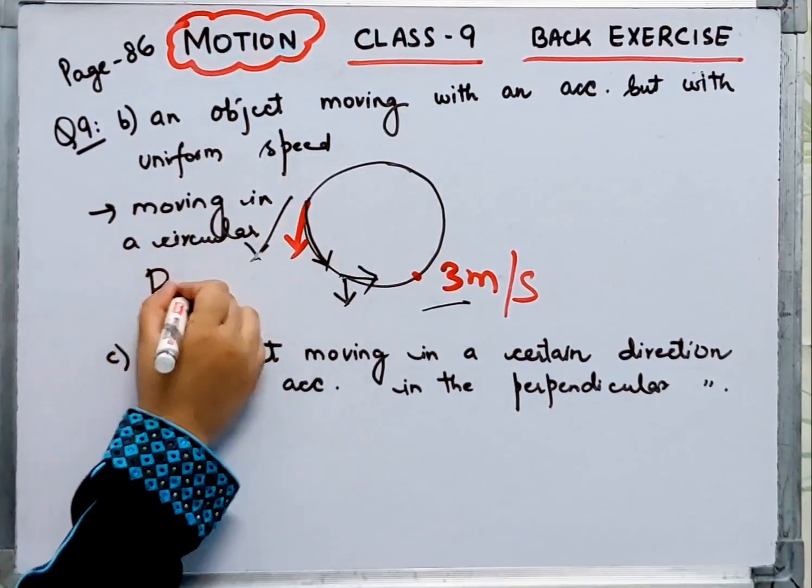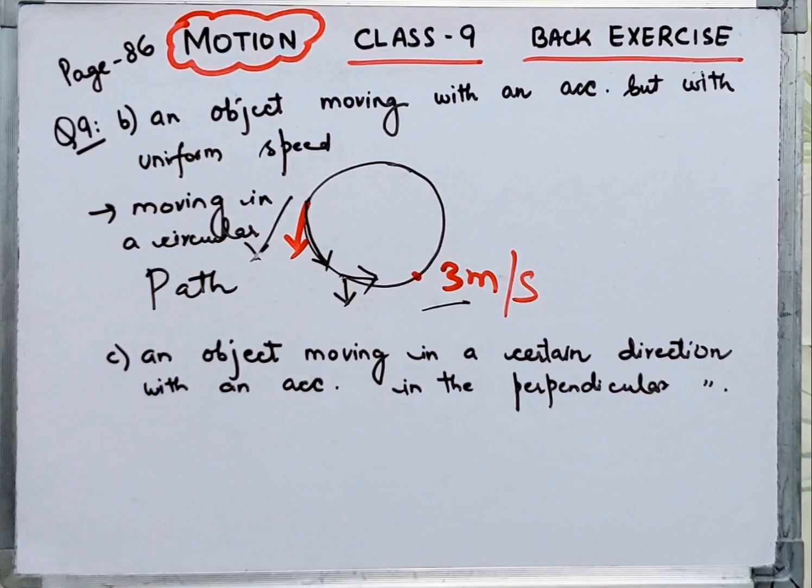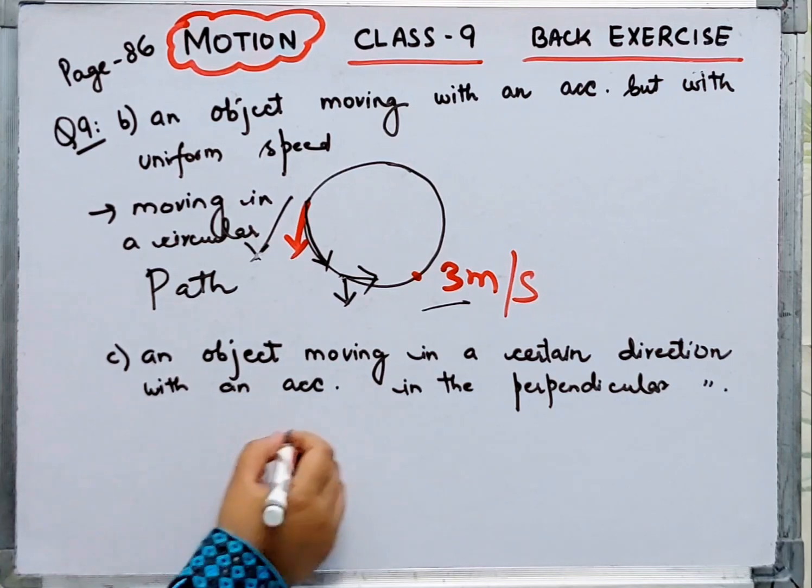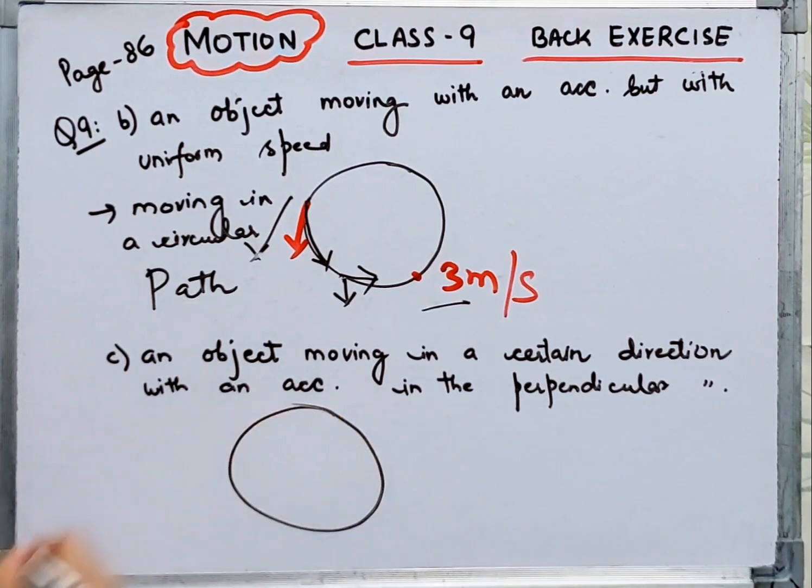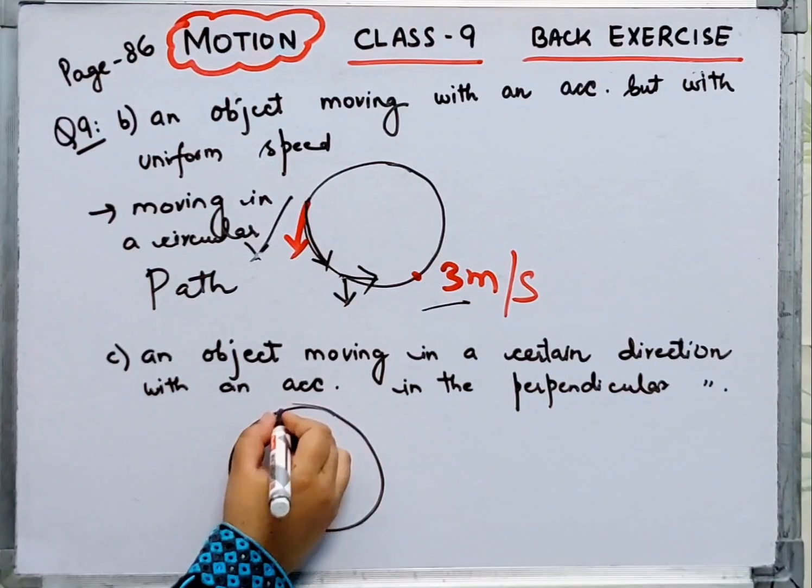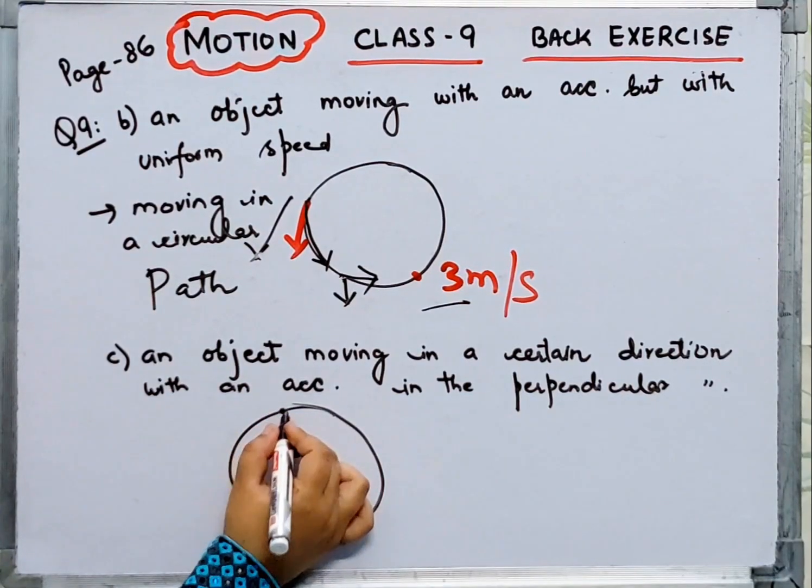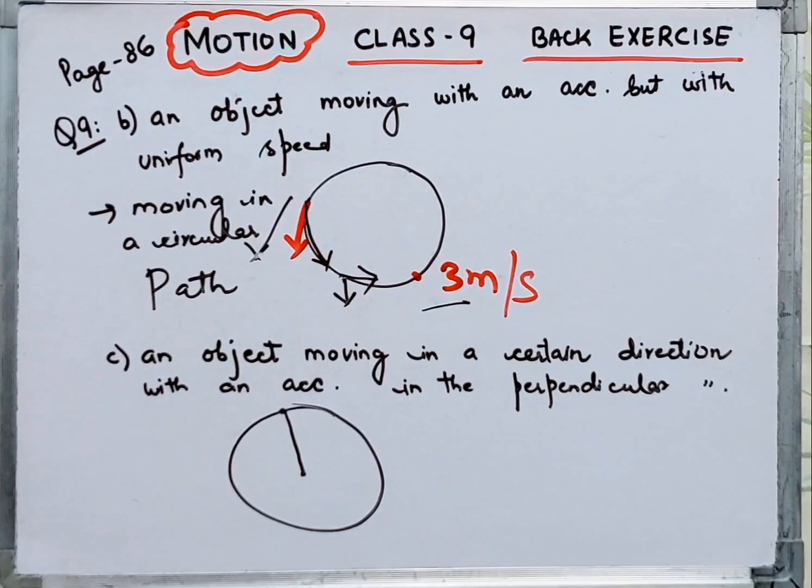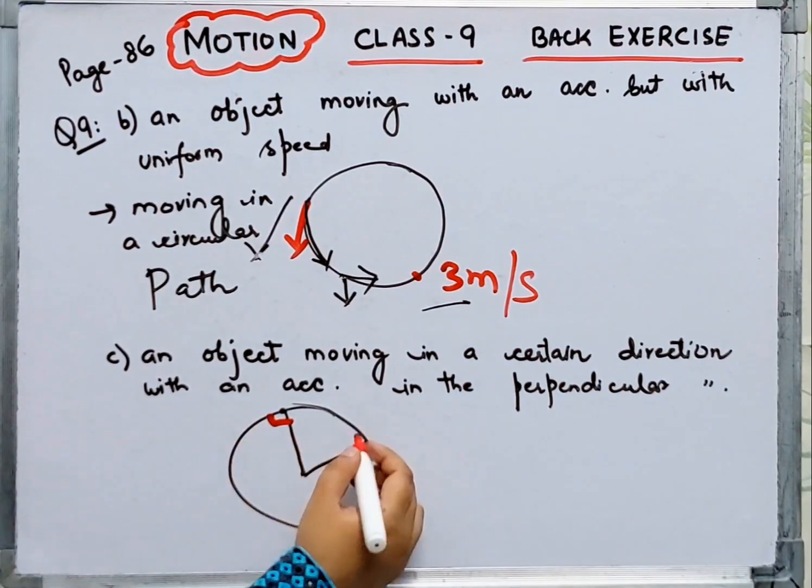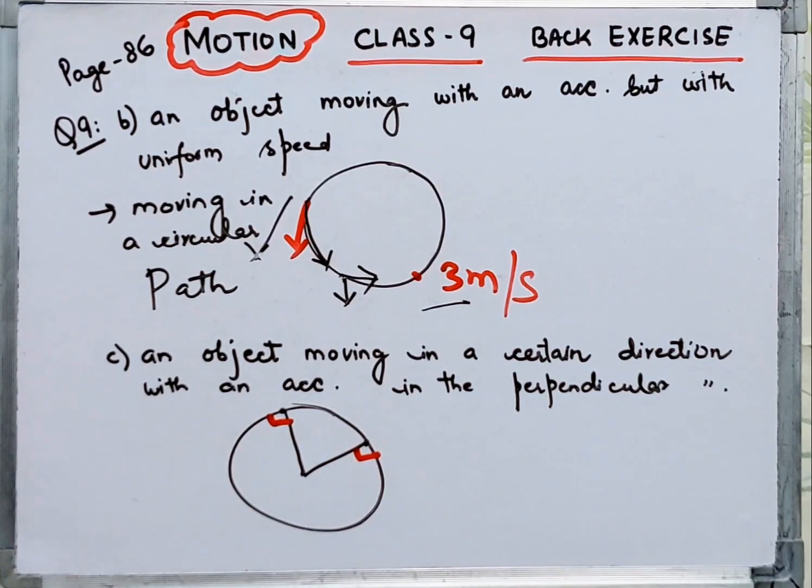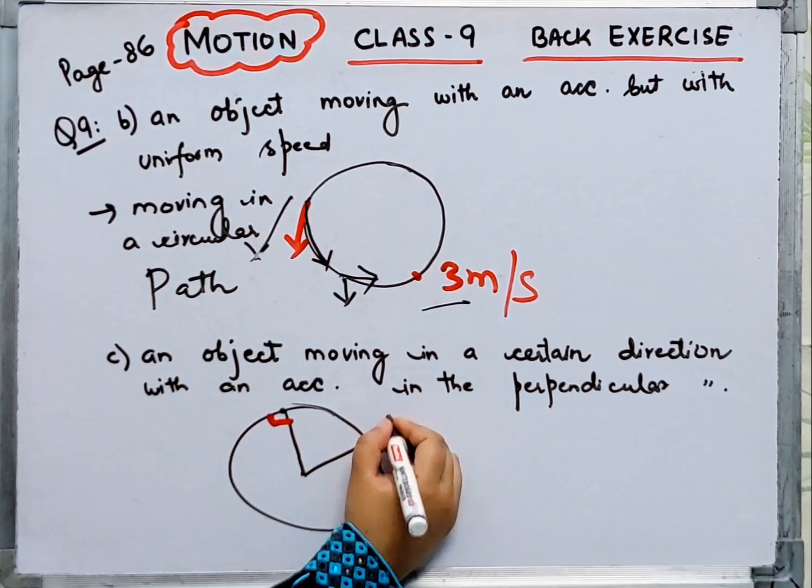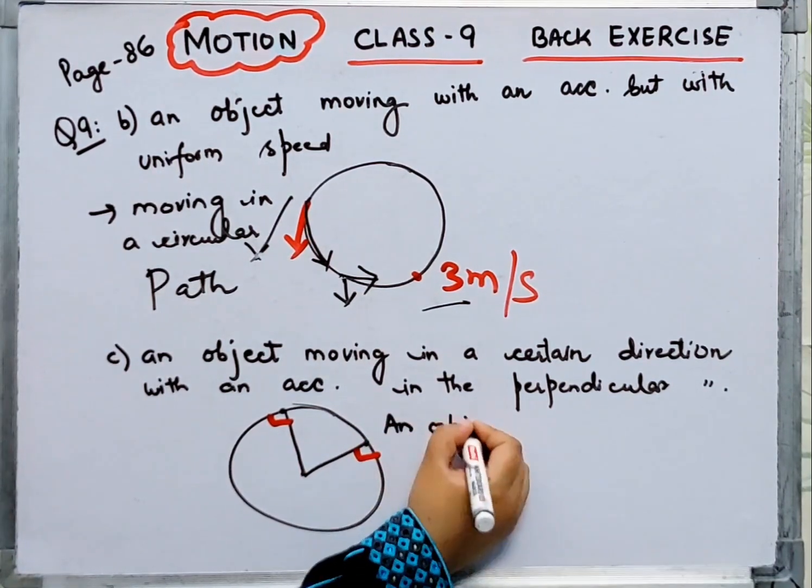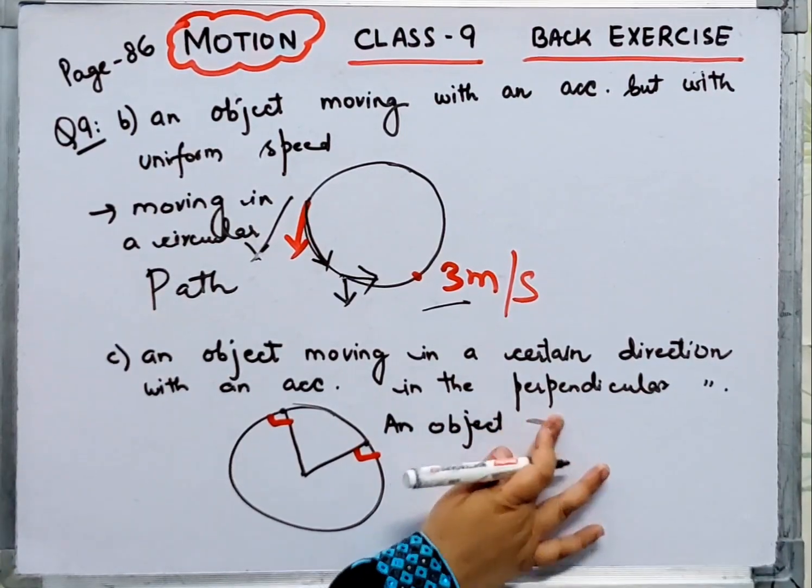Now you have an object moving in a certain direction with an acceleration in the perpendicular direction. If you look at the circular path, then the acceleration at any point is from the center and it is perpendicular to its speed. If you have an acceleration here, then it will be perpendicular. Same example, an object moving in a circular path.